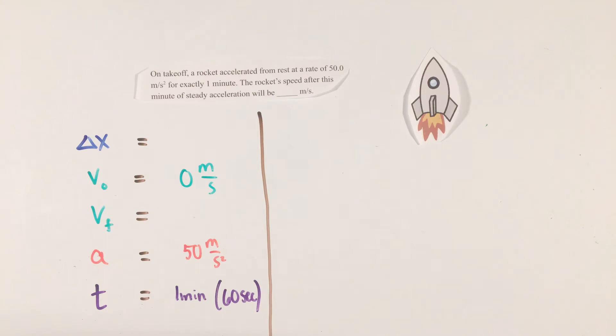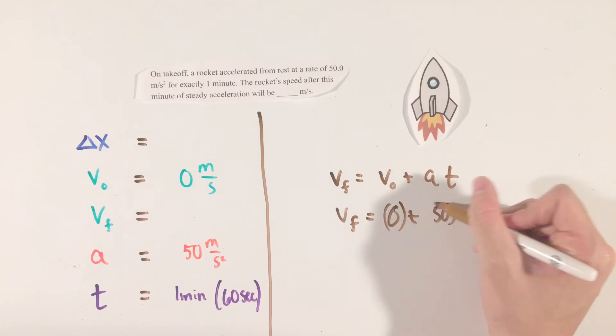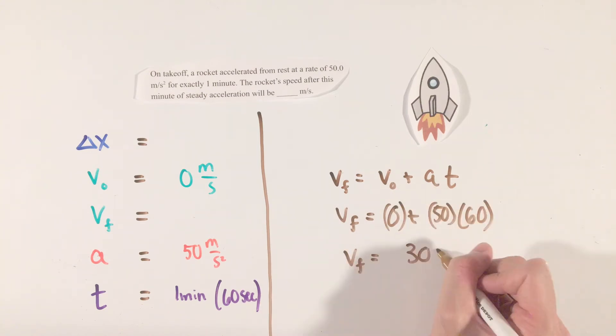With these three variables given, we can see that this kinematic equation would be a perfect fit, as only one variable in this equation is not given in the problem. Doing some quick math with your calculator, the final velocity is not hard to find.